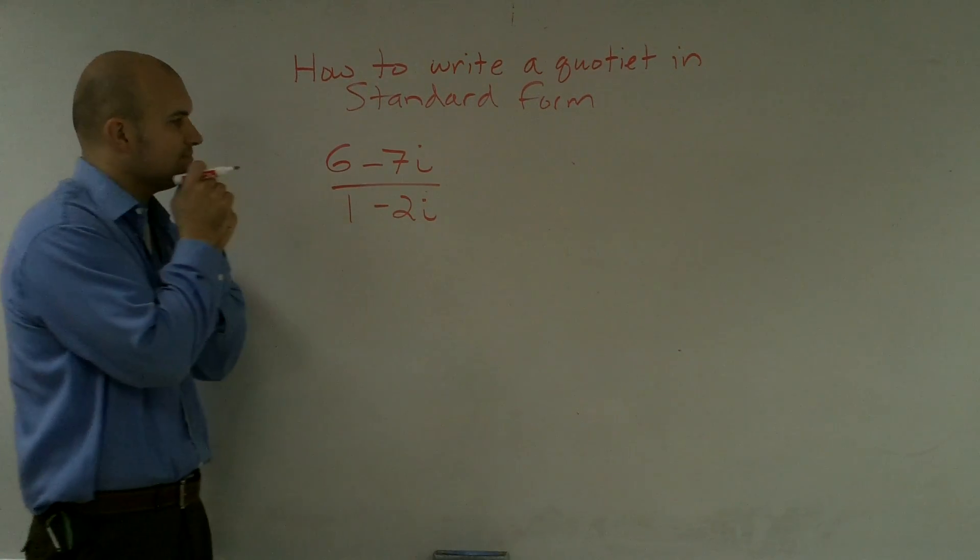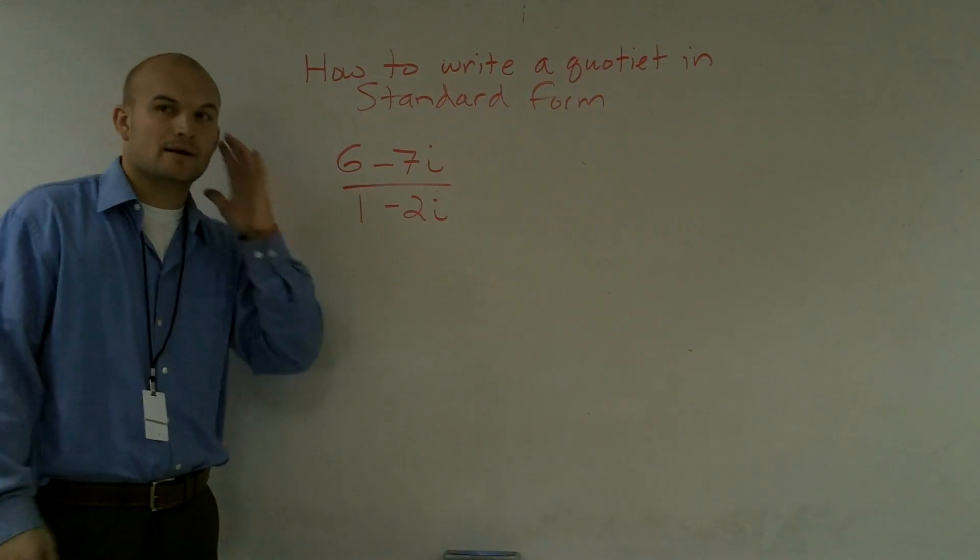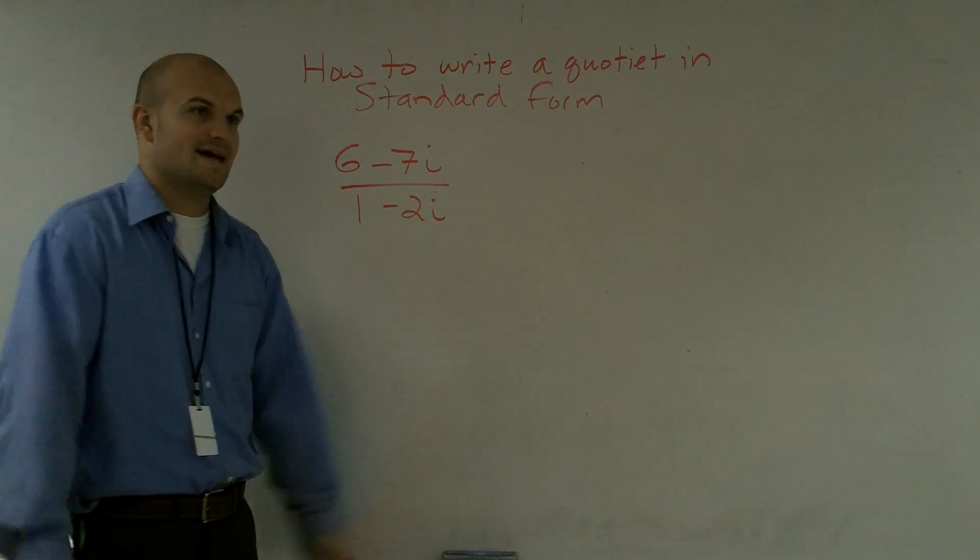First thing if you notice about this quotient, we need to get rid of what's on the bottom. And the first thing to get rid of what's on the bottom is we're going to want to multiply by its conjugate.